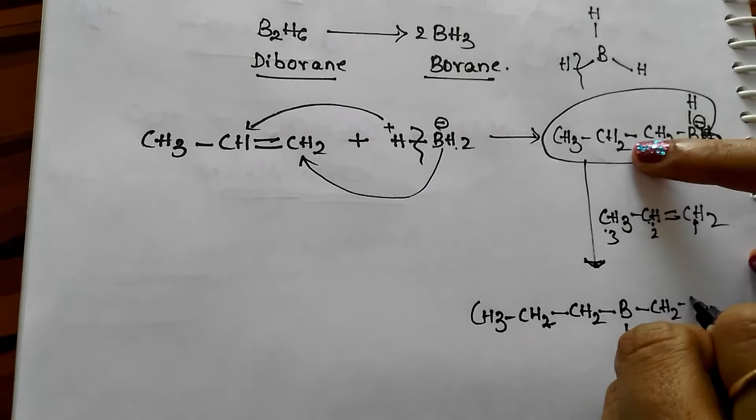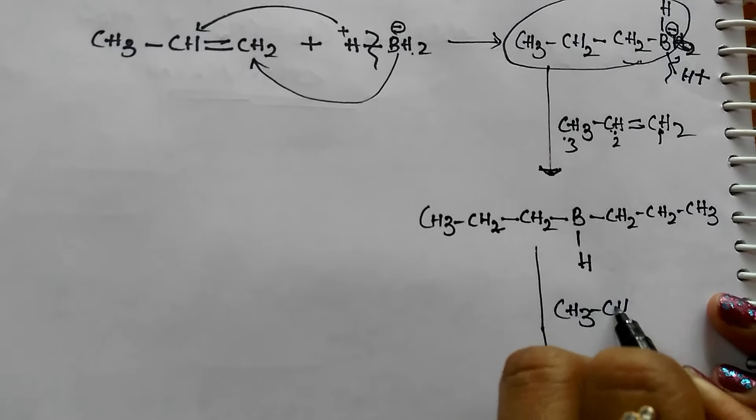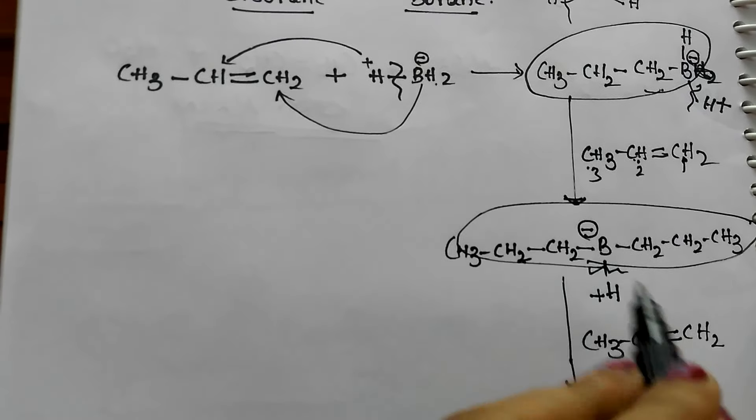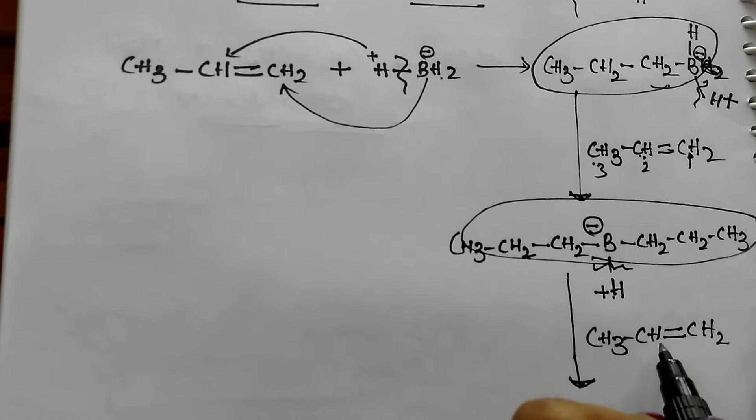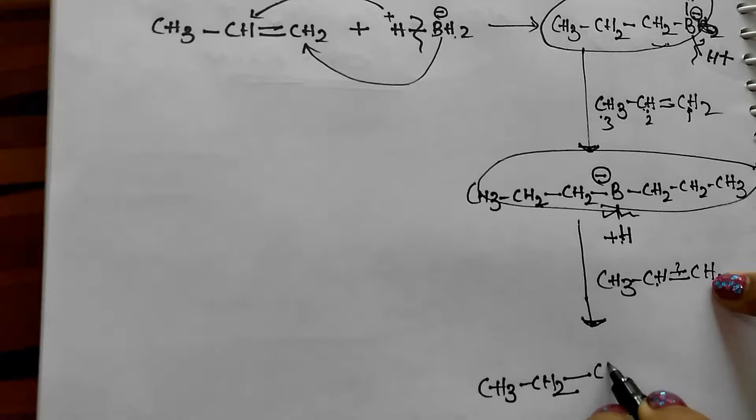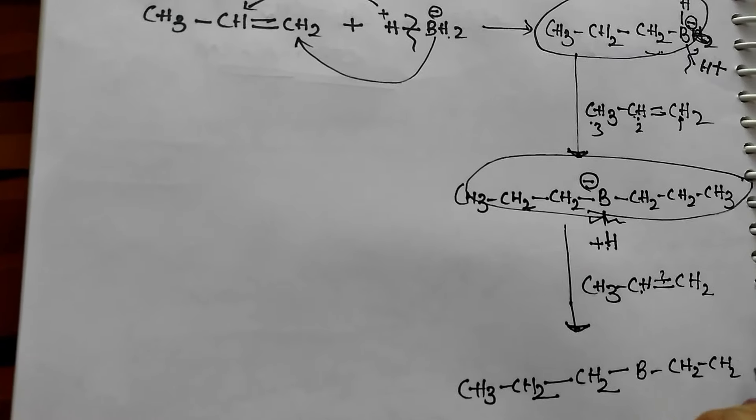Which upon further reacts with one more propene. Again this hydrogen will break as H+ and this boron gets negative charge. This total part comes and attacks the carbon having more hydrogens, and this H+ comes and attacks the carbon having less hydrogens. So this bond will break in such a way that CH3-CH hydrogen comes and attacks. So it will be CH2 and CH2, write this total part here: B-CH2-CH2-CH2-CH3.